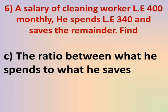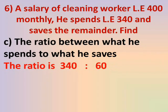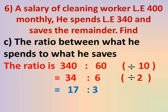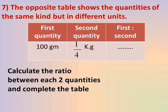Number C: The ratio between what he spends to what he saves. He spends 340 and saves 60 (which is 400 − 340). The ratio is 340 to 60. Dividing both by 10 gives 34 to 6. Both are divisible by 2: 34 ÷ 2 = 17 and 6 ÷ 2 = 3. The ratio is 17 to 3.